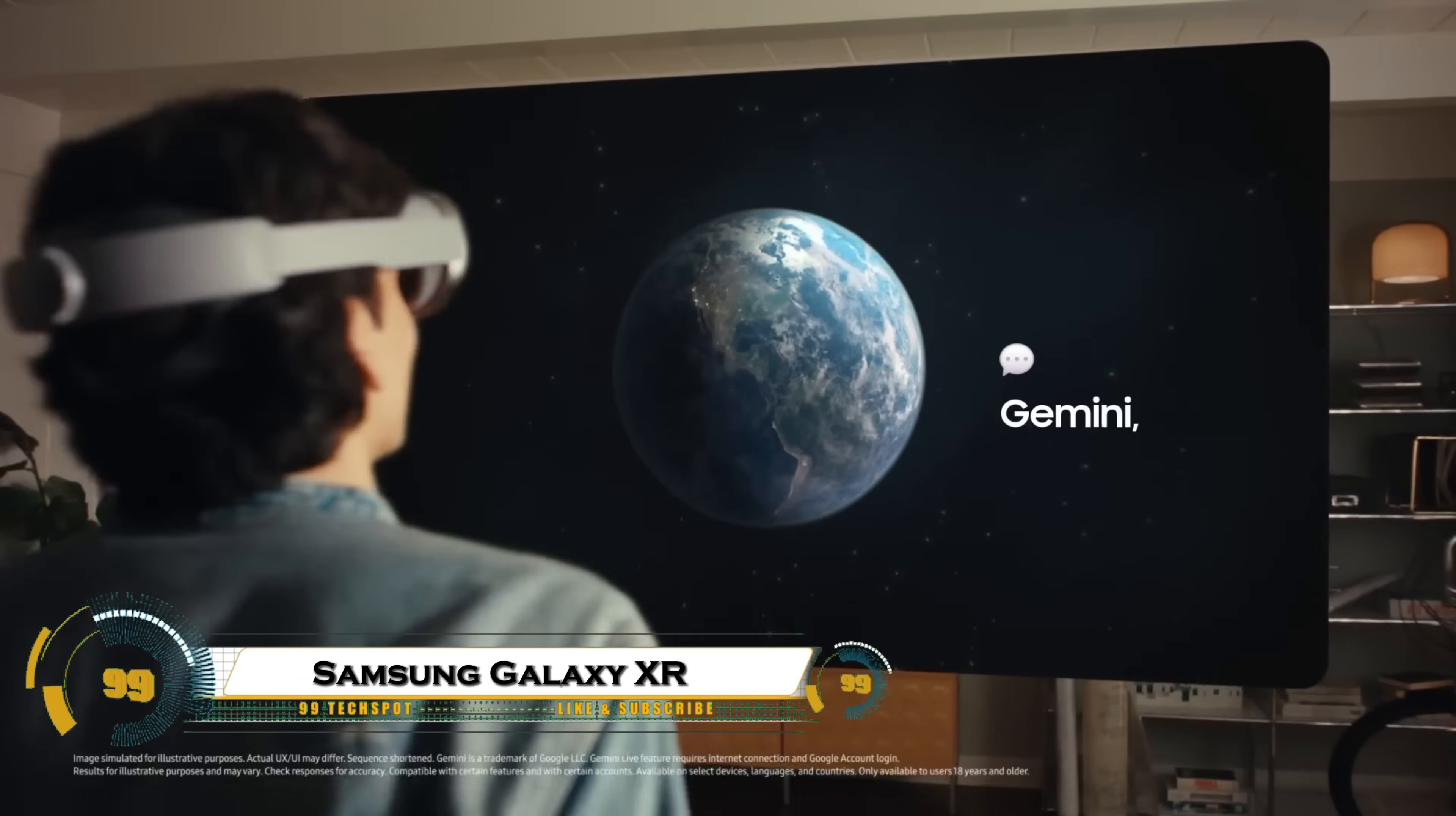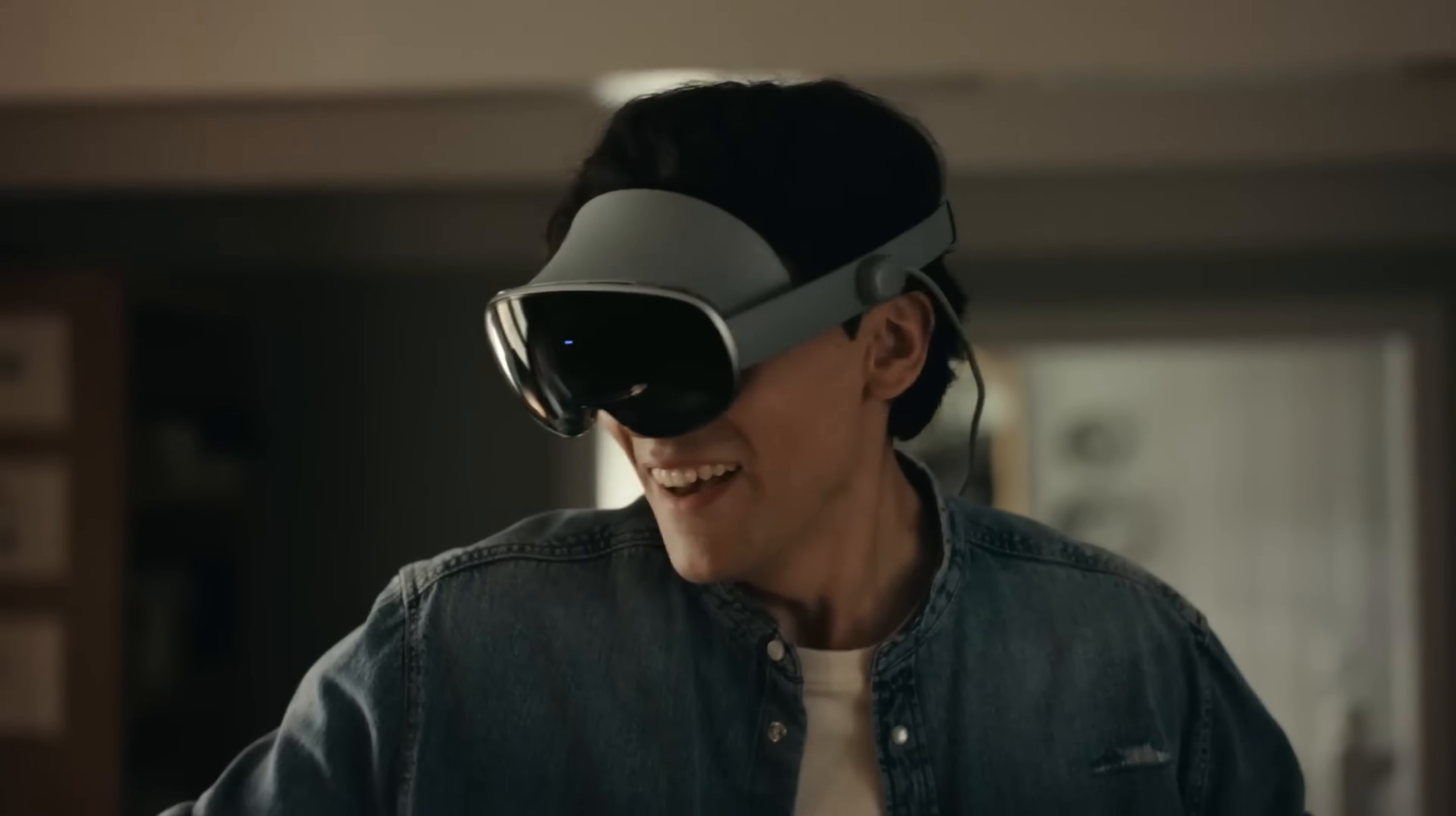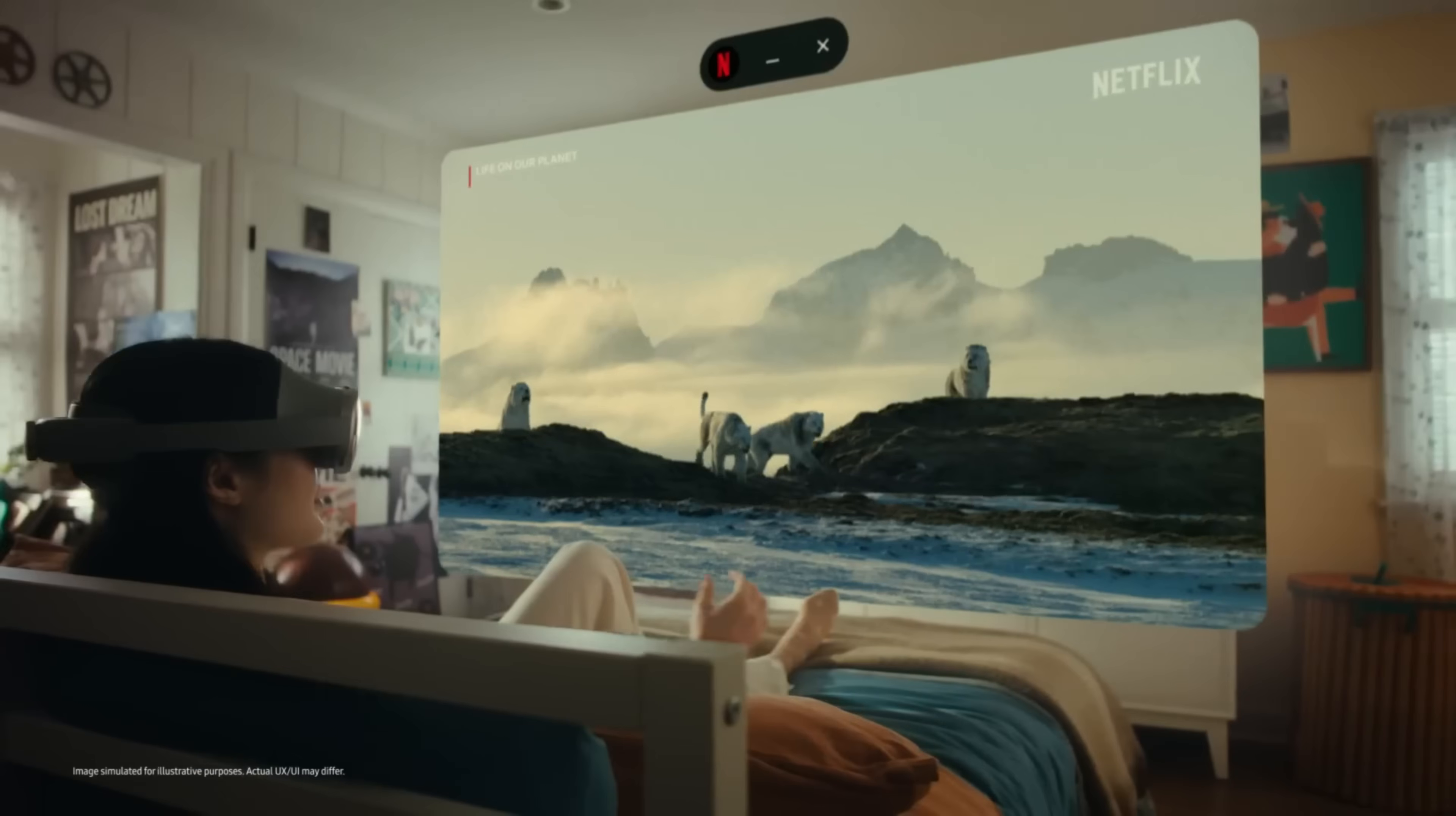The Samsung Galaxy XR-ER is a lightweight mixed-reality headset with dual 4K micro OLED displays, offering ultra-high resolution and a wide 109 degrees horizontal by 100 degrees vertical field of view for immersive visuals. Powered by the Snapdragon XR2 Plus Gen 2 processor with 16GB RAM and 256GB storage, it delivers smooth performance.